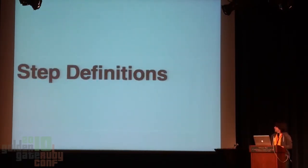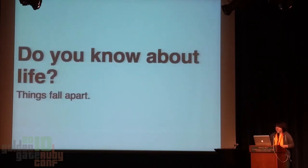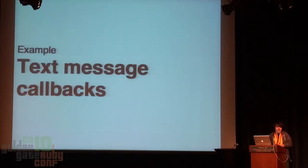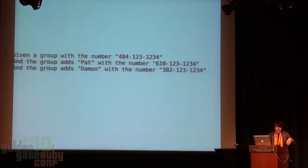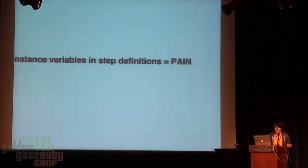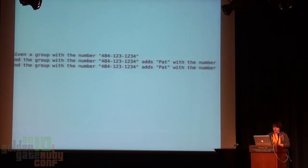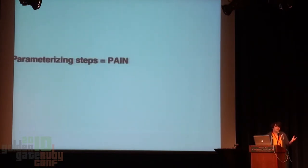The problem with Cucumber are step definitions. You have the kind of default web-racky ones that work pretty well. But if you know about life, you know things fall apart — especially when you're working with text messages or just things that are not in the browser, you get things like this: 'Given a group with the number 484 blank, when the group adds Pat and the group adds Damon with those phone numbers.' The problem is basically group is an instance variable. When you use instance variables in your step definitions, you're going to feel pain.